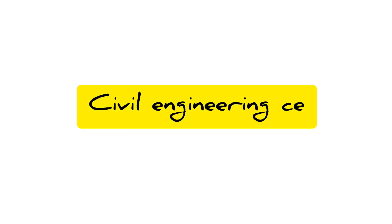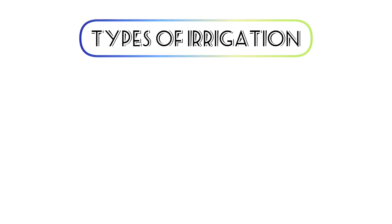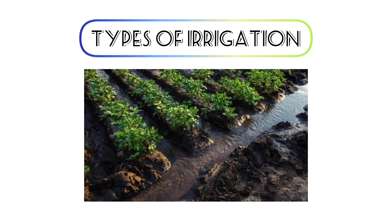In this video, let's learn about types of irrigation methods. The first one is surface irrigation, where water is scattered equally throughout the land with the help of gravitational pull and doesn't require a machine. There are three types of surface irrigation: basin irrigation, flood irrigation, and water strip irrigation.